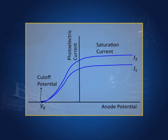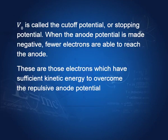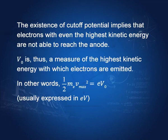V₀ is called the cutoff or stopping potential. When the anode potential is made negative, fewer electrons reach the anode — only those with sufficient kinetic energy to overcome the repulsion. The existence of a cutoff potential implies that V₀ measures the highest kinetic energy with which electrons are emitted. In other words, the maximum kinetic energy is: ½mₑVmax² = eV₀, where V₀ is the cutoff potential.